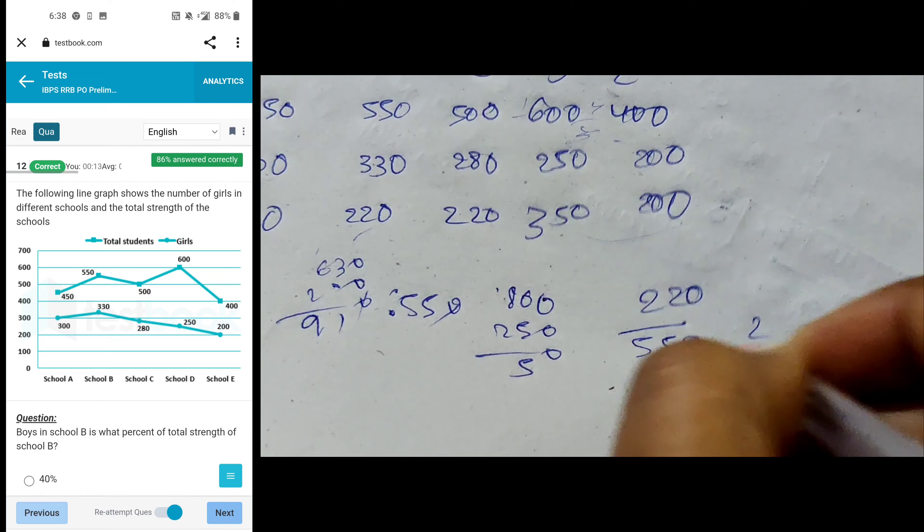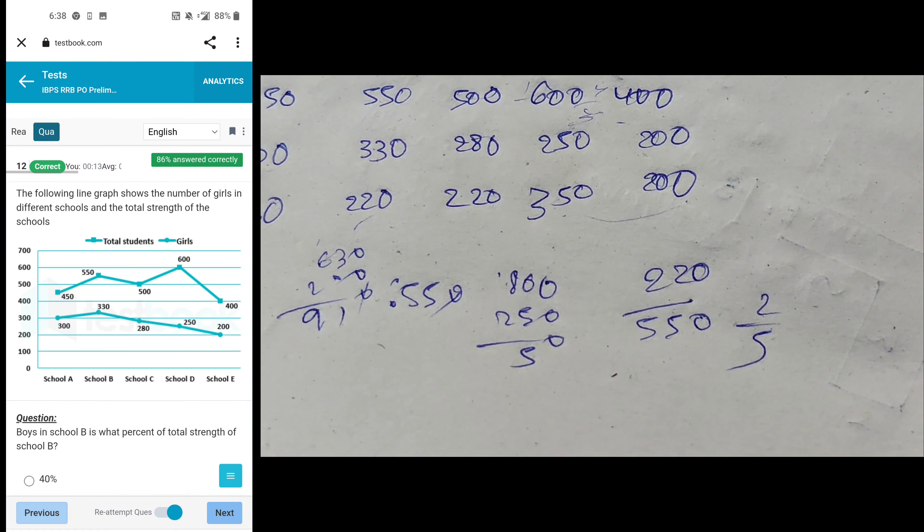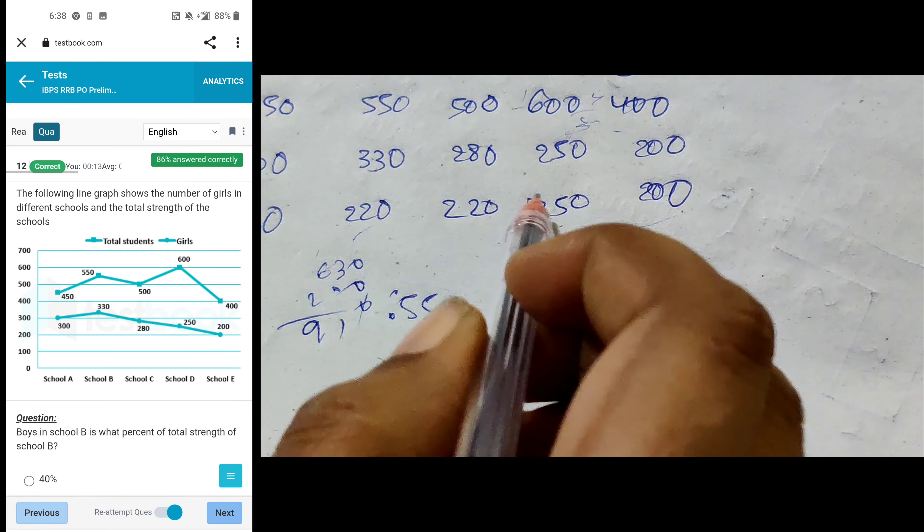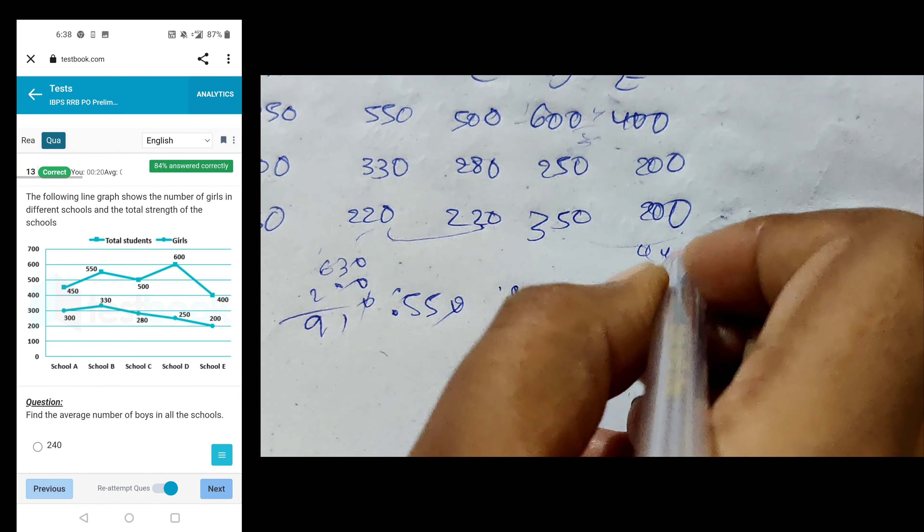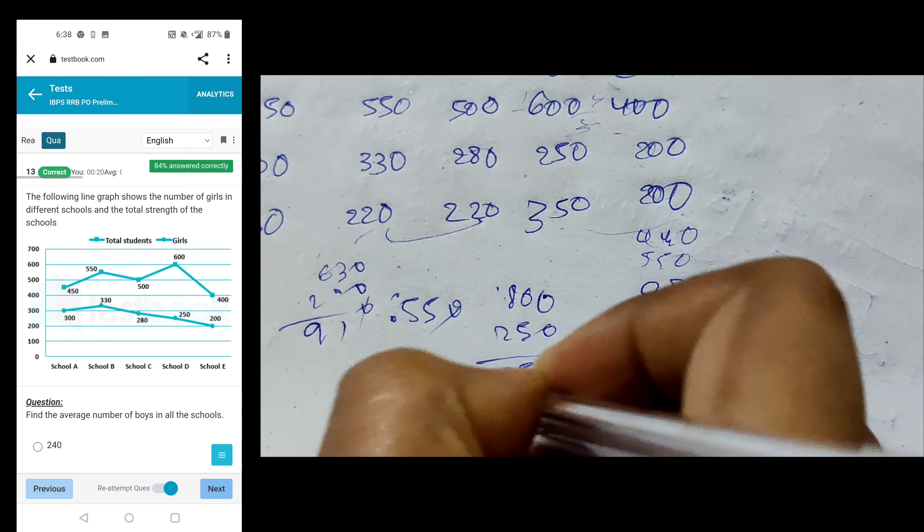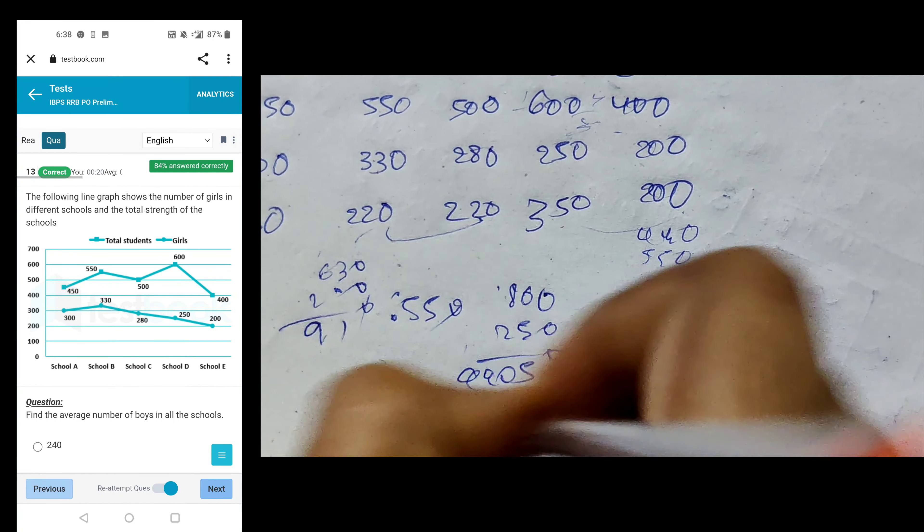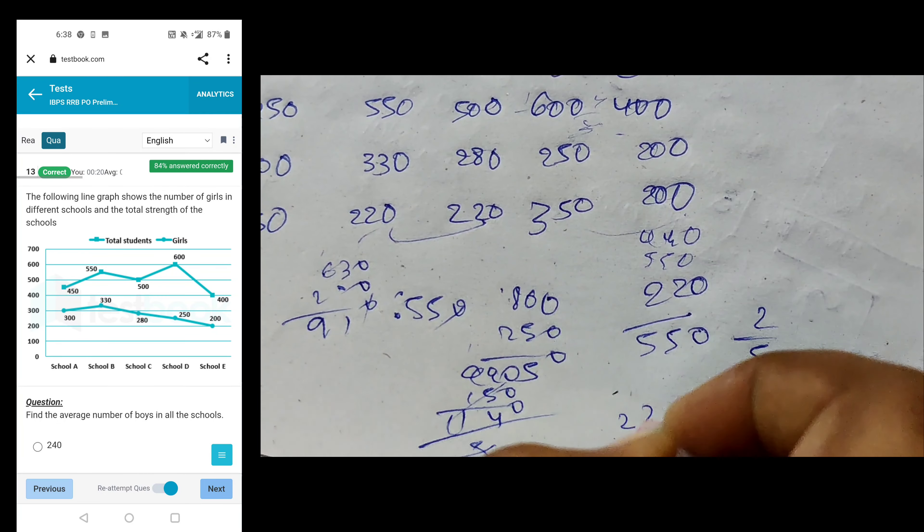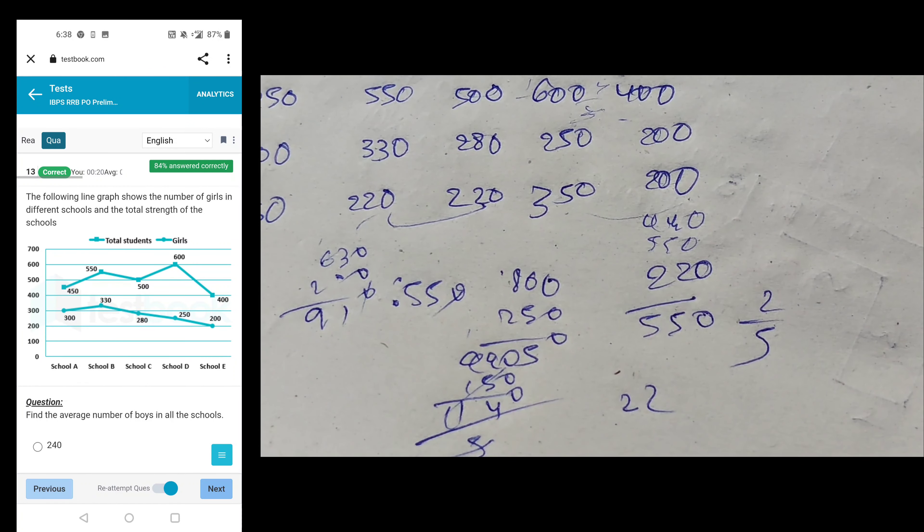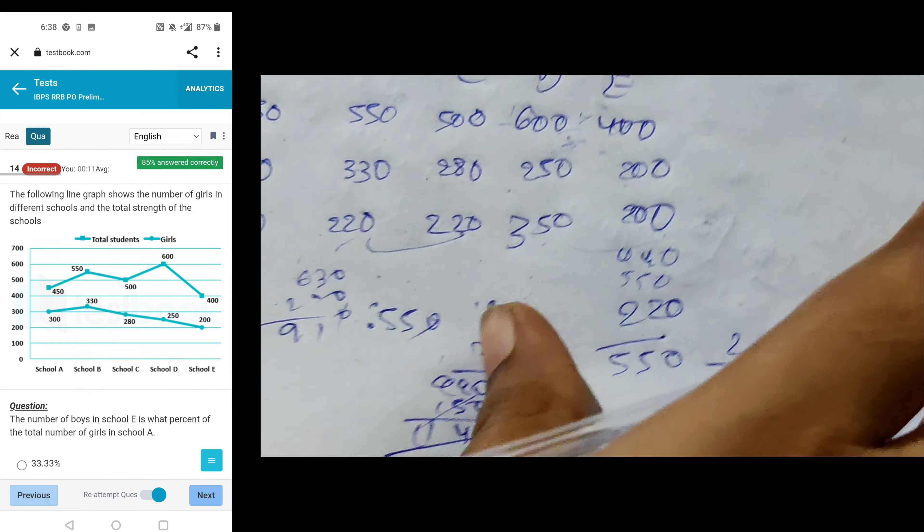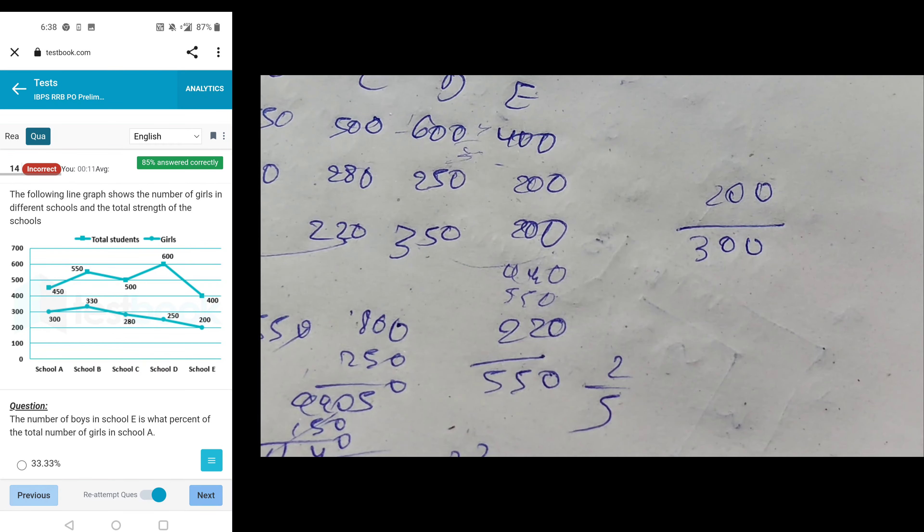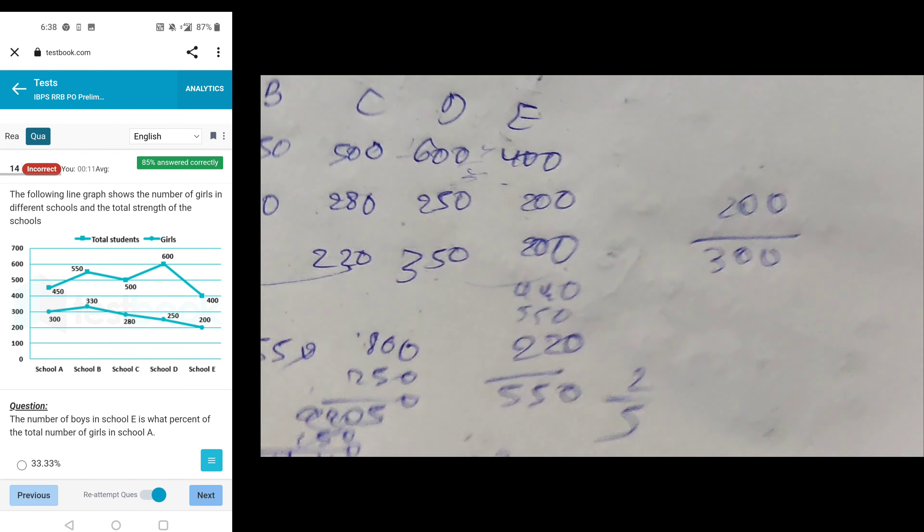Boys in school B is 220, what percentage of total strength of B which is 550? So 2 by 5, that's 40%, option A. Average number of boys in all schools: 150, 250 is 440, and 550 is 990, plus 150 is 1140 divided by 5, so 228. Next, number of boys in school A is 200, what percentage of girls in A which is 300? So 2 by 3 is 66.67%.